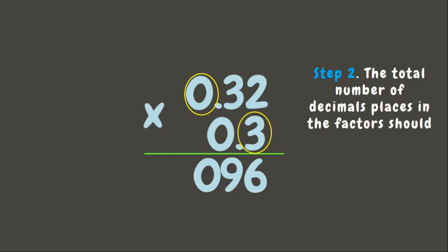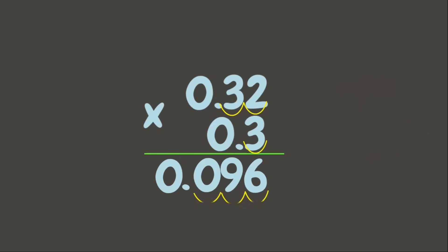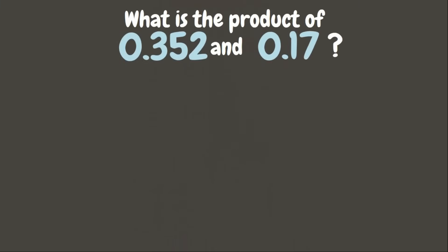The next step we need to remember is: the total number of decimal places in the factors should be the same in the product. Let us count the decimal places in the factors: one, two, and three. Therefore we need to put the decimal point in the product three places from the right: one, two, three. Let's put zero. Now this is our final answer.